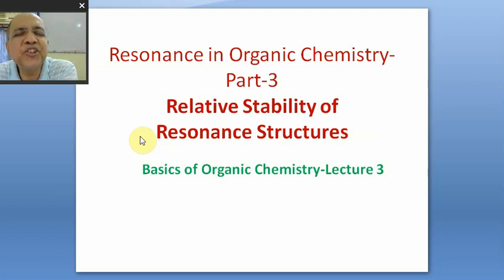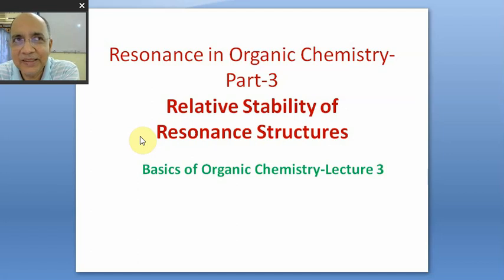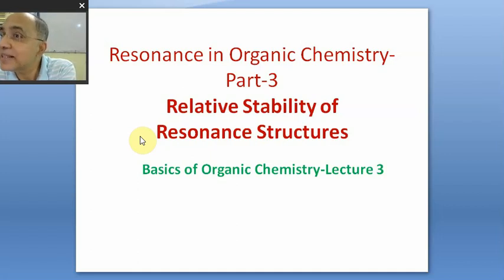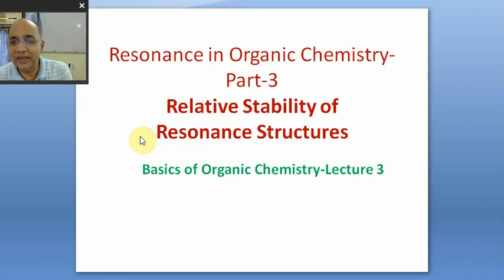Pattern two followed by pattern three means you will not miss one. Although today we shall see the middle one contributes less to the hybrid, it does contribute. If you polarize the carbonyl pi bond and make plus-minus, the number of pi bonds is reduced. Today we learn: if the number of pi bonds is less in a resonance structure, that RS is less stable and will contribute less to the hybrid. Today's program is resonance structures and their relative stabilities.